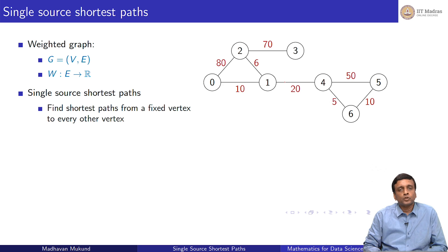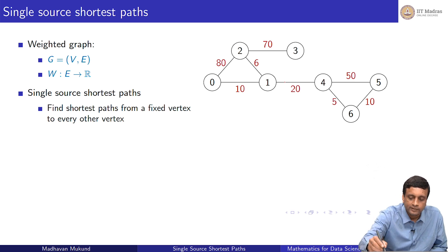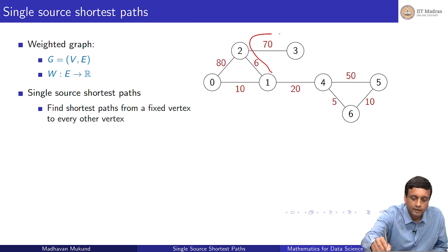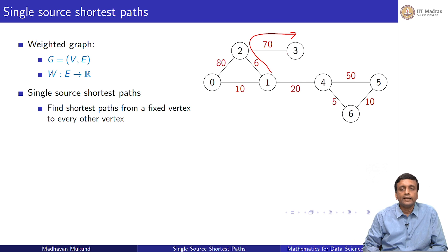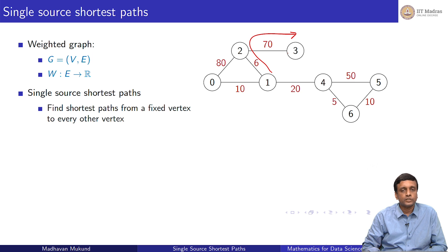In the single source shortest path problem, we look at edge weights. We take paths as representing the weights underneath. If I take a path, the total length of that path is not the number of edges but the weights attached to it that I have to add up — for example, 6 plus 70.